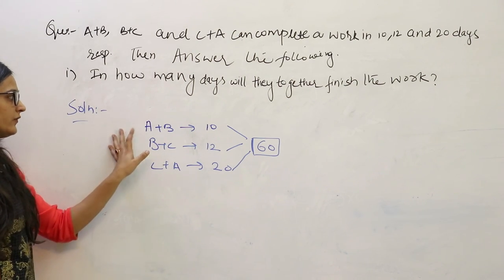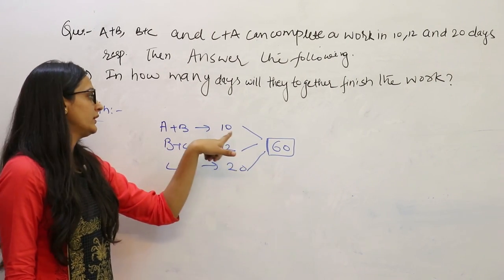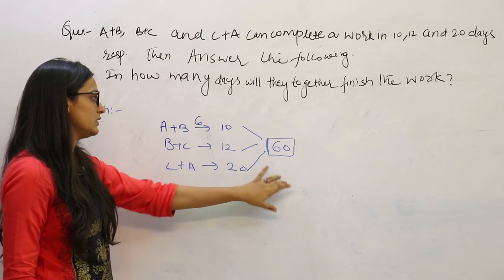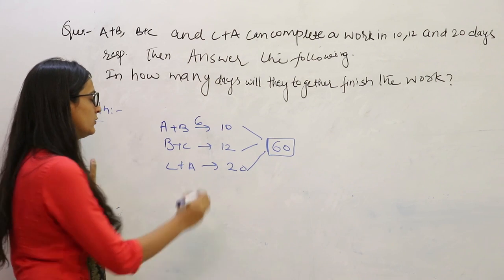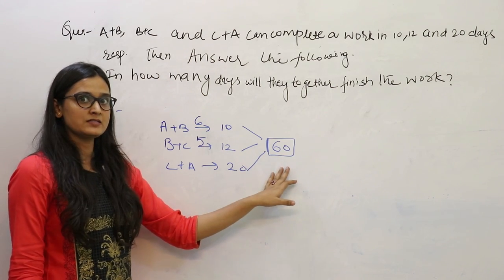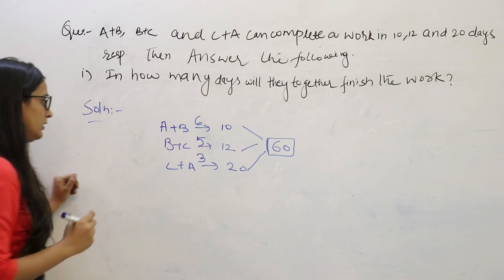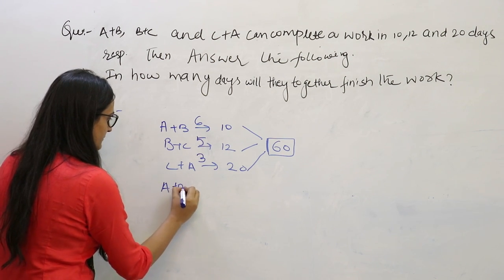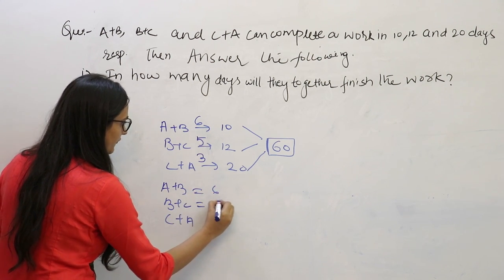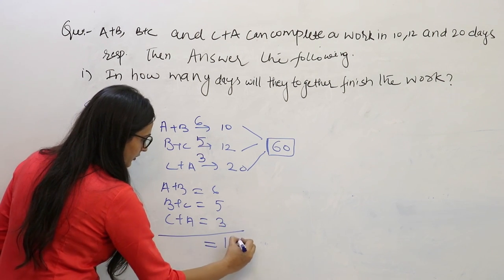We find the 1-day efficiency of A+B, B+C, and C+A together. Divide 60 by 10 — 1-day work of A+B is 6. Divide 60 by 12 — 1-day work of B+C is 5. Divide 60 by 20 — 1-day work of C+A is 3 units. Now add the efficiency of A+B, B+C and C+A: 6 + 5 + 3 = 14 units.